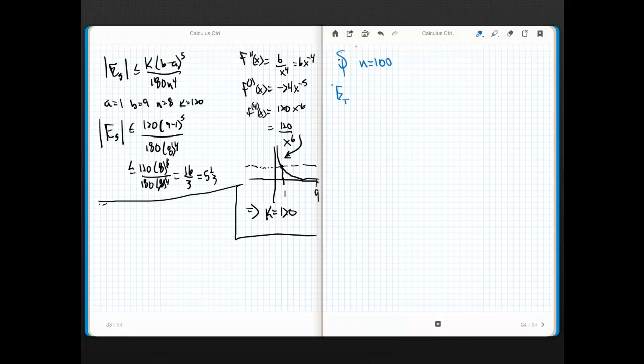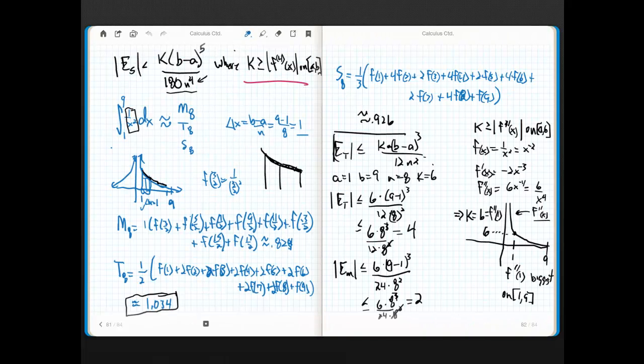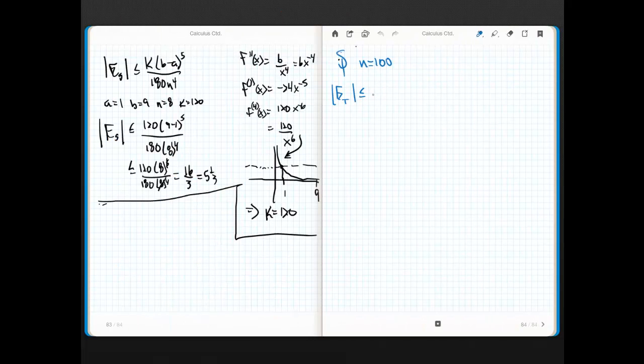I'm going to do my error for my trapezoid. Excuse me. I know that this is going to be less than. Now, look, I'm just going to have, since it's the same function, I'm going to have the same k value, right? So, it's going to be 6 times 8 cubed, because a and b haven't changed. That's going to be 12 times 100 squared, all right? So, this is going to be 6 times 8 cubed divided by 12 times 100 squared. I'm going to have the error for the midpoint. It's going to be less than or equal to the same 6, right? Times 8 cubed, only now it's 24 times 100 squared, correct? Again, this thing is going to be twice as accurate as this thing. In other words, the error is going to be twice as small. It's exactly the same, only my denominator is twice as big, which makes the value of the fraction twice as small.